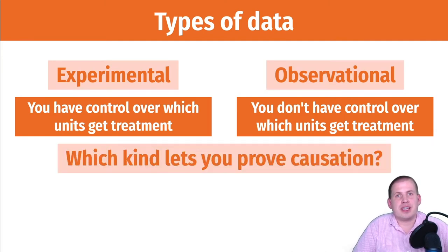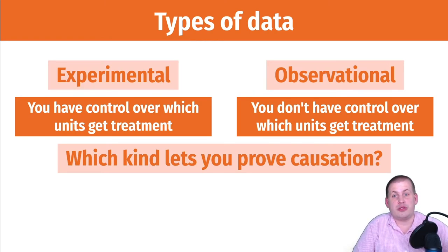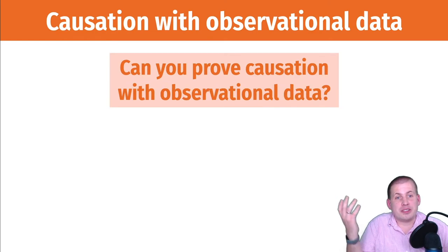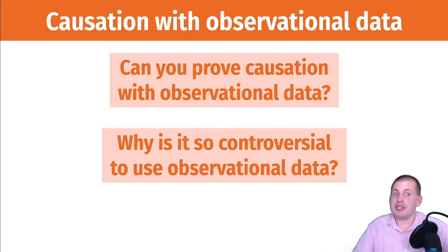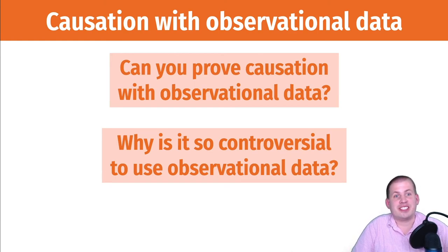Often there's this gold standard for experimental data, and many people would say only experimental data lets you prove causation, because with observational data everybody's selecting into the programs so we can't actually measure the program effect. Can you prove causation with just observational data? Maybe — but that's too weak of an answer. Yes, showing you different ways of measuring causation with just observational data is the whole purpose of this class.